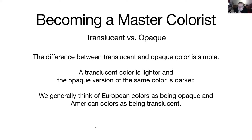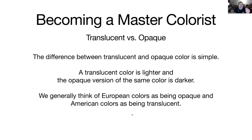But it's not quite that simple. Translucent colors are lighter versions of the same color, and I actually prefer working with translucent colors for two main reasons. Number one, translucent colors are more easily changed — I can make a translucent color deeper much easier than I can make an opaque color darker.